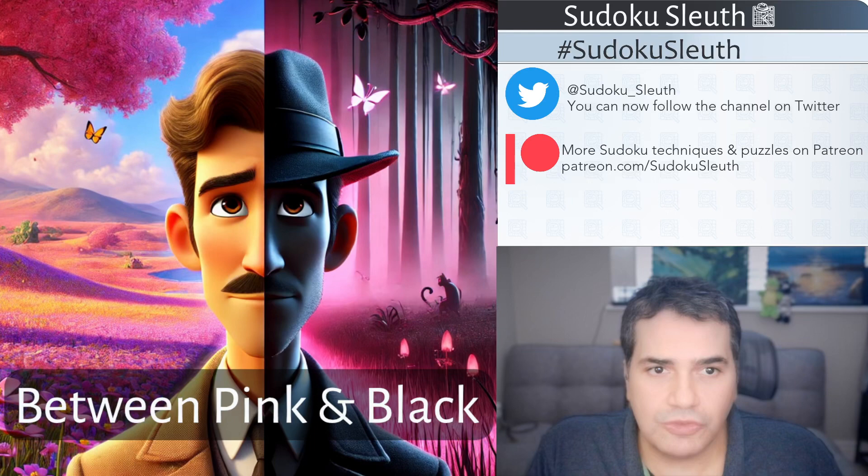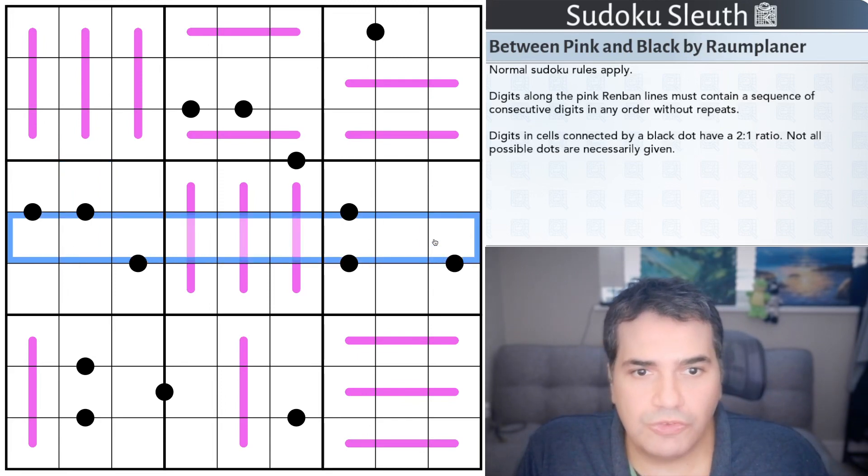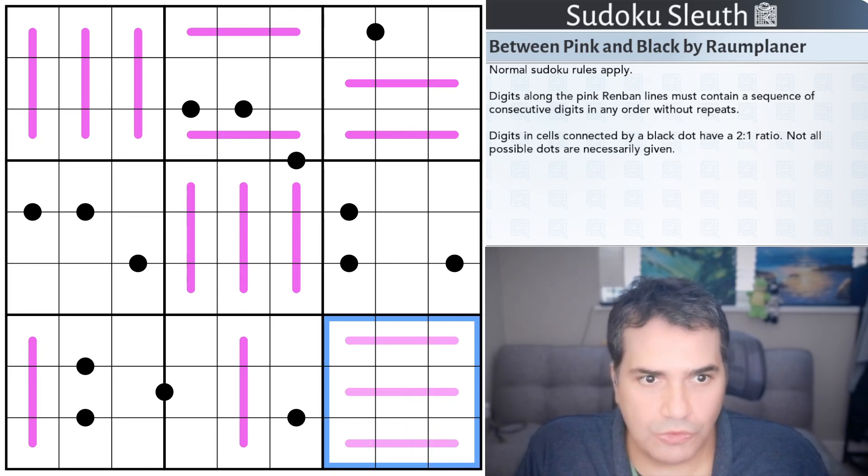I'm really looking forward to giving this a go. Let's take a look at today's puzzle and rule sets with Between Pink and Black by Rome Planner. Normal Sudoku rules apply, place the digits one to nine once each in every row, every column, and every three by three box, nothing unusual there.